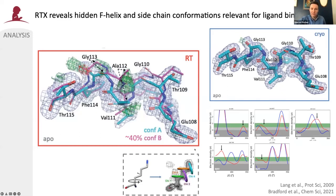This is also visible on a side-chain level. The program we use to inspect these electron density maps automatically is called Ringer — the Lang paper is the reference for that — where you rotate each residue around the chi angles looking for density, producing a plot displaying electron density as a function of rotation around 360 degrees. Peaks indicate new conformations, and we found new conformations of residues within the site for the APO structure in a variety of places.